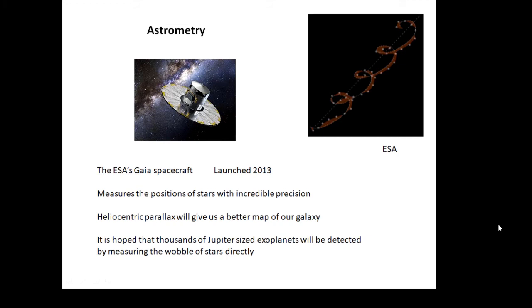In the past we haven't been able to do this very well to find exoplanets, but in 2013 the European Space Agency sent up the Gaia spacecraft and it measured the positions of lots and lots of stars very accurately. Its main job was to measure the distance—how far away stars are—using something called heliocentric parallax, which I'm going to talk about in Topic 13.